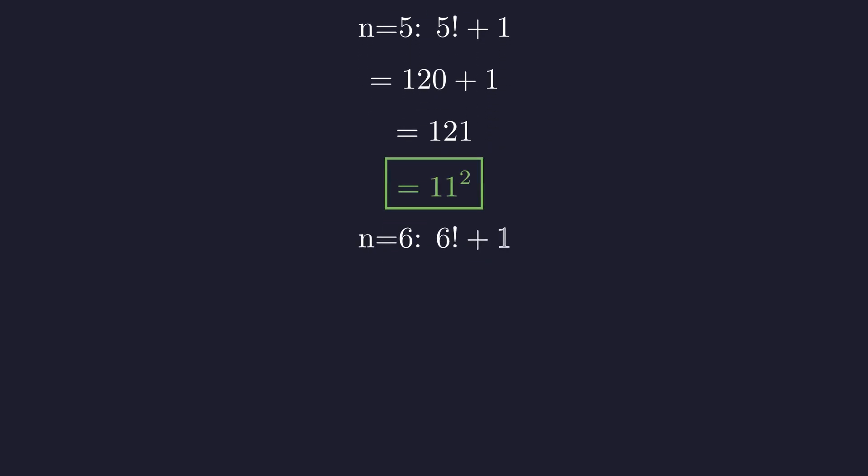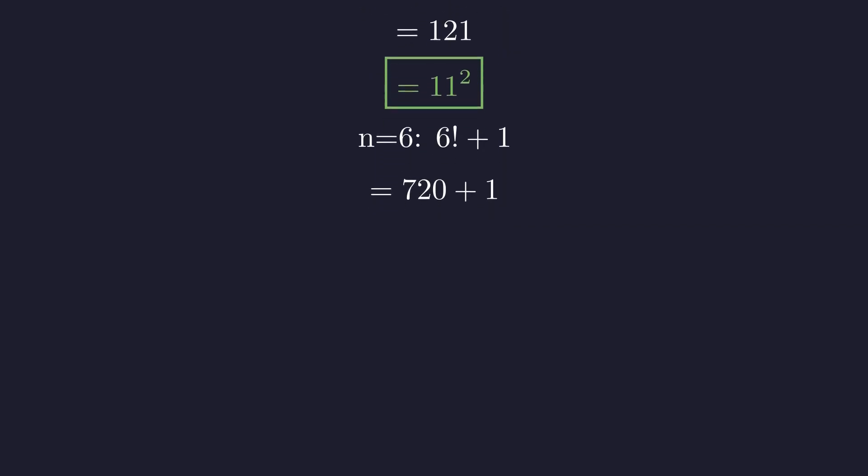For n equals 6, 6 factorial is 720. Adding 1 gives 721. A quick check shows this is not a perfect square.